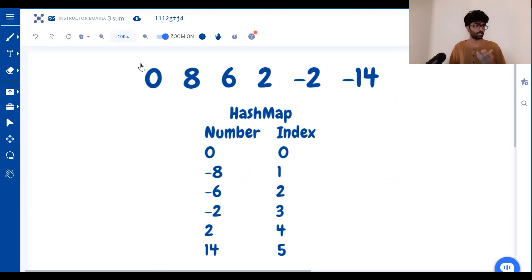So what's minus 0? Minus 0 is 0. Its index is 0. So 0 and 0 goes into a hash map. The key is 0. The value is 0. The negative of 8 is minus 8. Minus 8 goes in with an index of 1. Minus 6 goes in with an index of 2 and so on. Now we've tackled the entire right hand side.